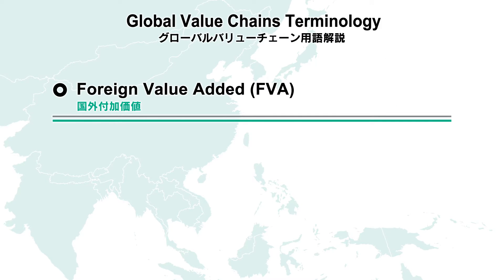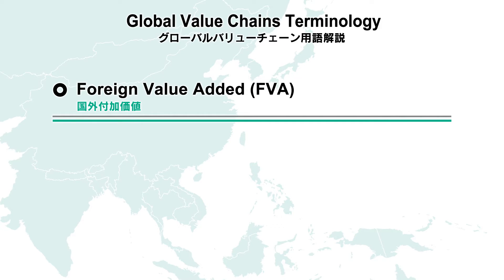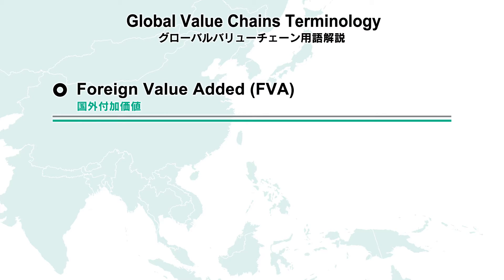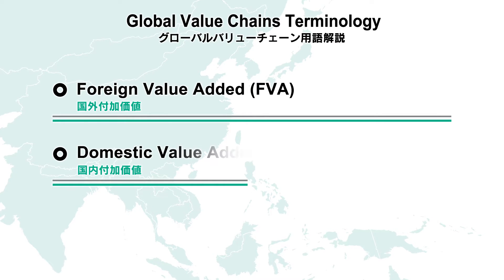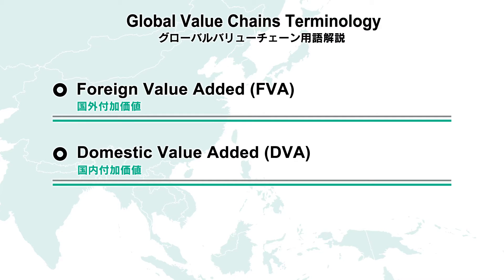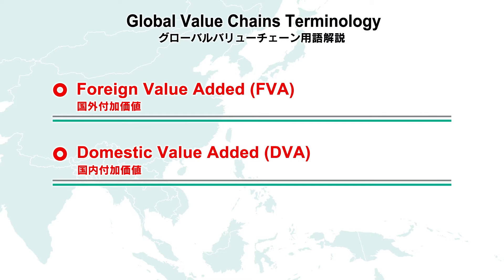Foreign Value Added (FVA) indicates what part of a country's gross exports consists of inputs that have been produced in other countries. Domestic Value Added (DVA) is the part of exports created within the country — the part of exports that contributes to GDP. The sum of foreign and domestic value added equates to gross exports.